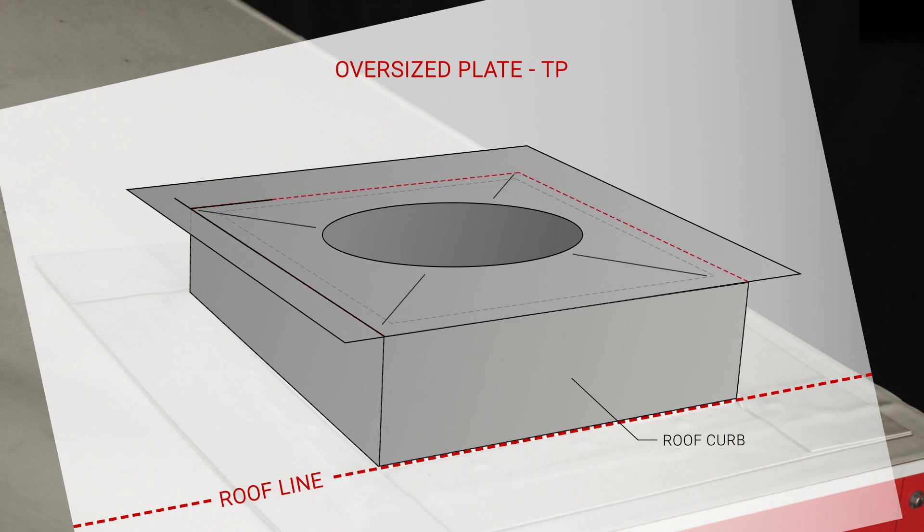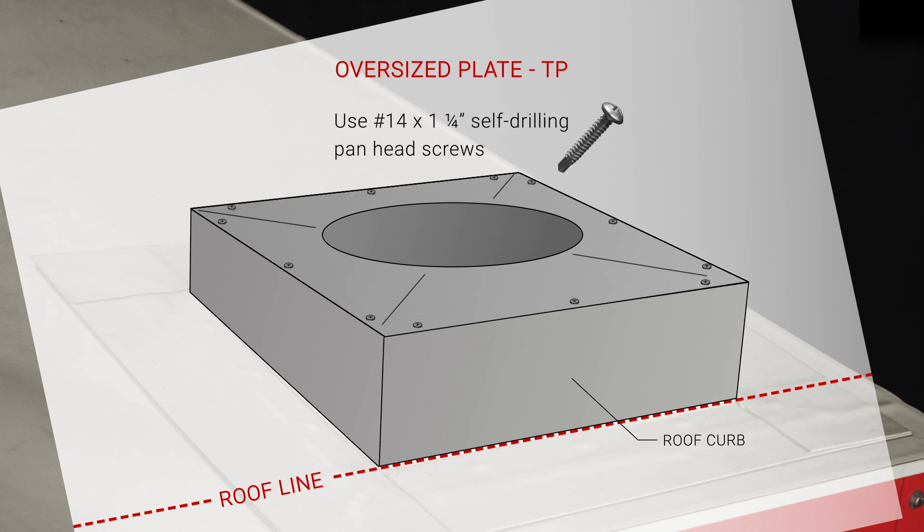Once in place, you must trim off the excess plate material to allow for fan placement. You can then secure the plate to the top of the curb using three self-drilling pan head screws per side.